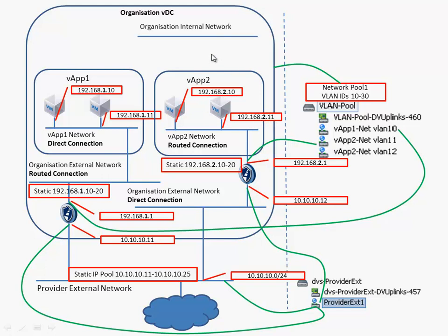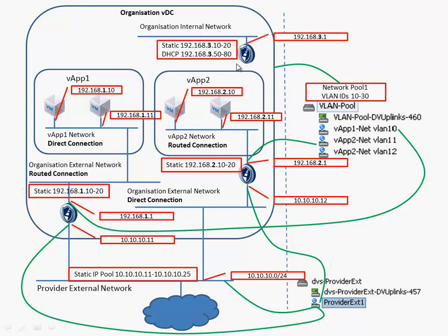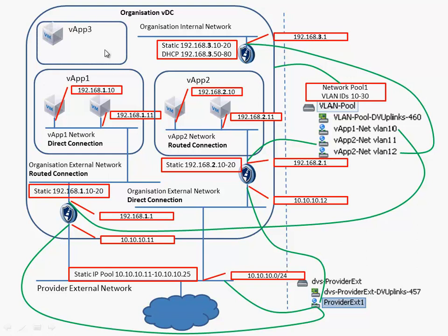The last network we will create in this slide is the organization internal network, which has two ranges: a static range of 192.168.3.10 to .20 and a DHCP range of 192.168.3.50 to .80. In this case we will not connect this network to the external network or the provider external network — it is just an internal network. This internal network is connected to a port group backed by VLAN ID 12, and the virtual machines within vApp3 can only communicate among each other and not with the outside world.